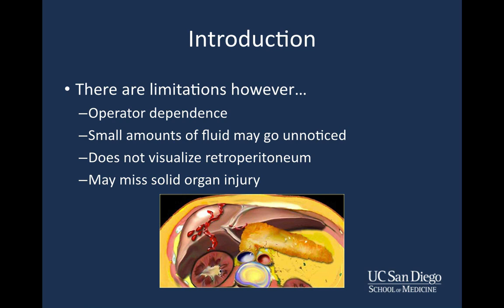Ultrasound also does not visualize the retroperitoneum, so if there is a concern for retroperitoneal pathology, the FAST exam may not be ideal. And you may see solid organ injury, but you often may not. If you have significant concern for solid organ injury, you're going to need a CT scan because ultrasound alone is inadequate.